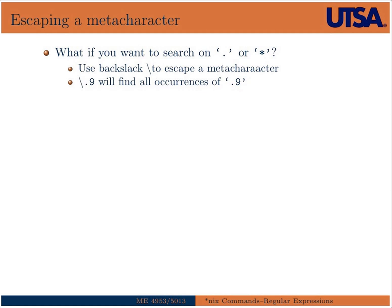If you want to search for a meta-character literally — like a dot or star — since these have special meanings in patterns, you need to escape them using a backslash. So backslash-dot-nine would find all occurrences of the literal string '.9'.